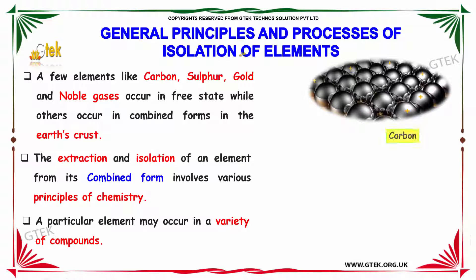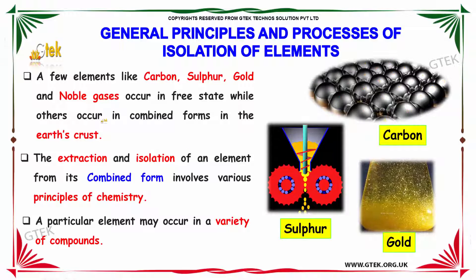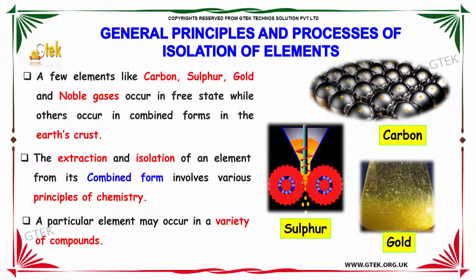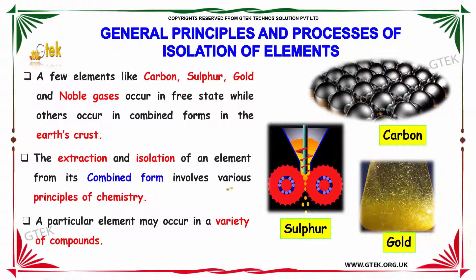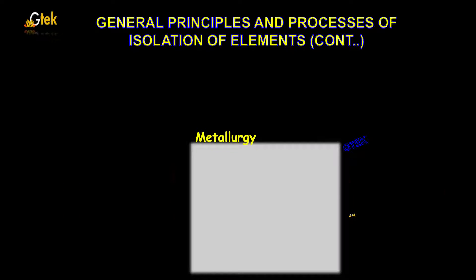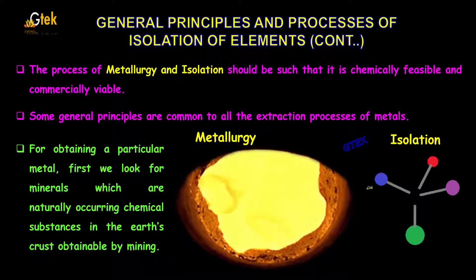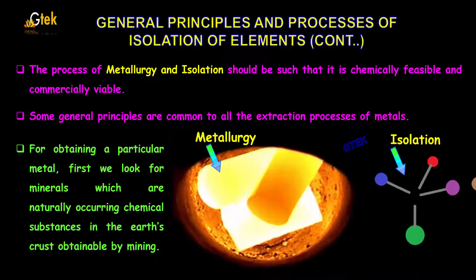Let's start with the general principle and process of isolation of elements. A few elements like carbon, sulfur, gold, and the noble gases occur in free state, while others occur in combined forms in the earth's crust. The extraction and isolation of an element from its combined form involves various principles of chemistry. A particular element may occur in a variety of compounds.